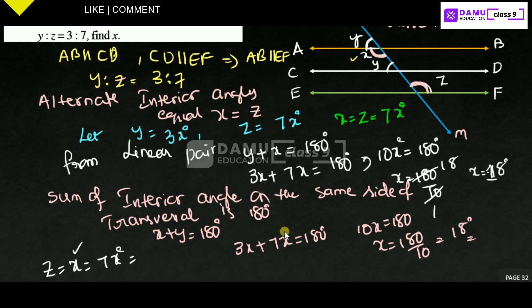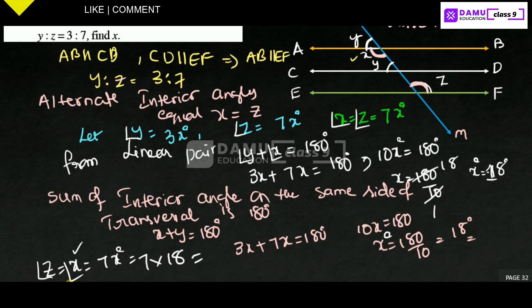So x degrees equals 18 degrees. Therefore z equals 7 × 18 = 126 degrees, and y equals 3 × 18 = 54 degrees. So z is also 126 degrees. Thanks for watching, please subscribe.